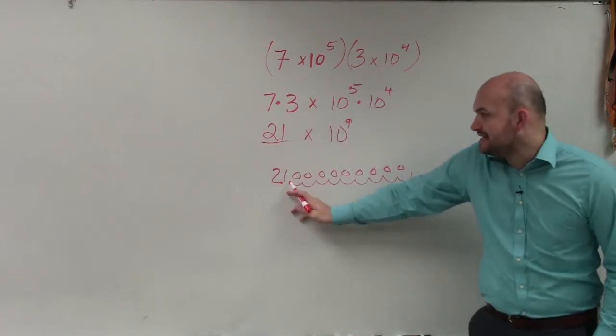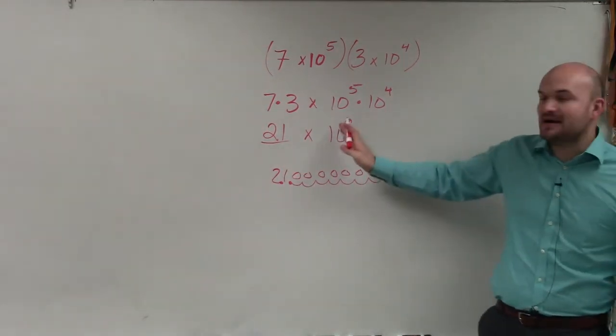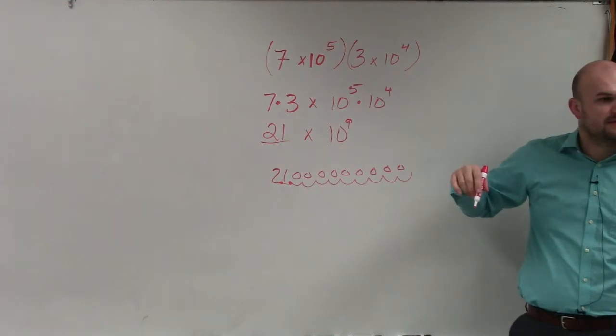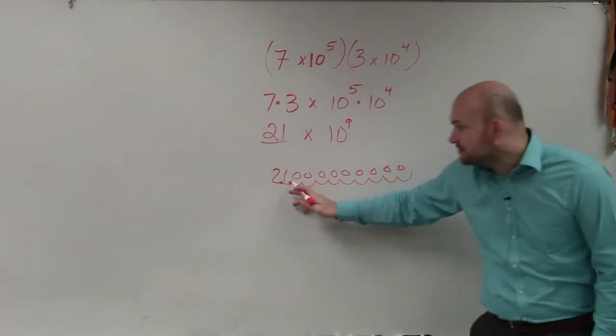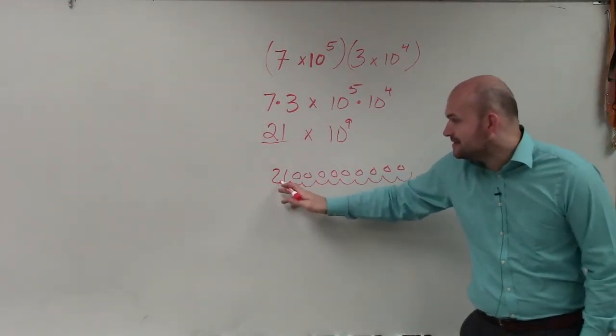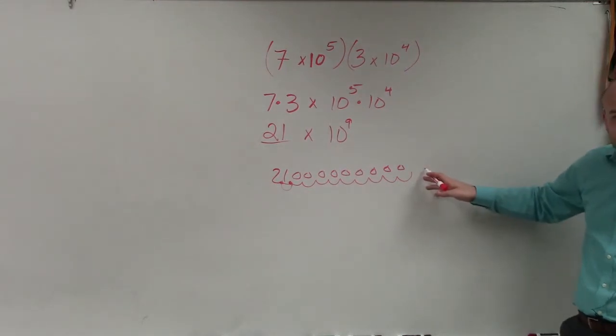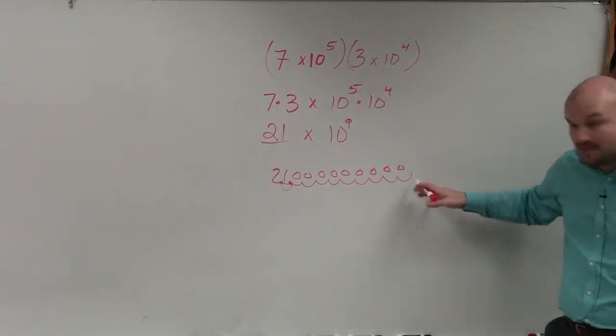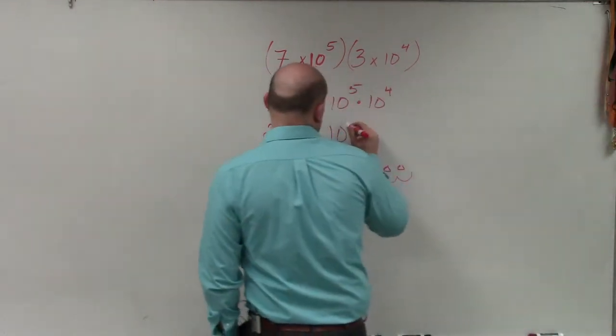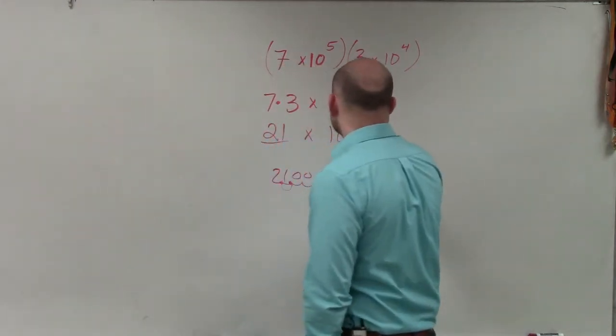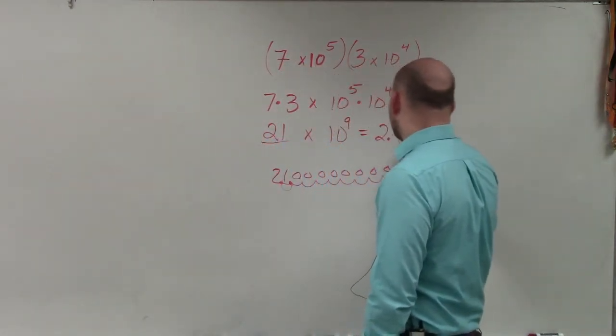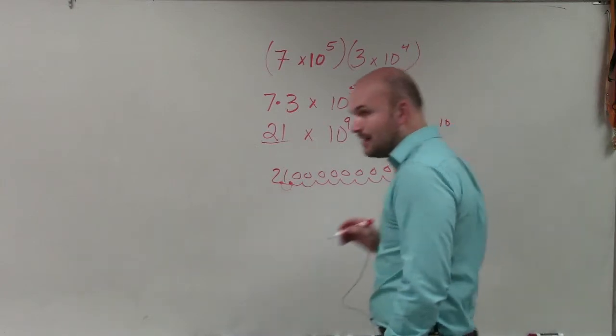So instead of moving it 9 spots to the right, how many spots to the right, if I move it to over here, do I have to do? If I move the decimal point from here to here, now to go all the way over there, how many spots to the right do I need to move? 10. 10. So let's change it. So that is the same thing as 2.1 times 10 to the 10th power.